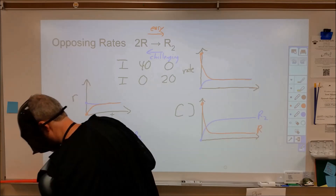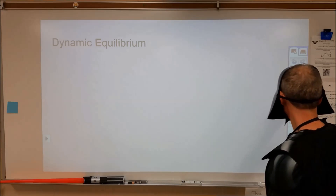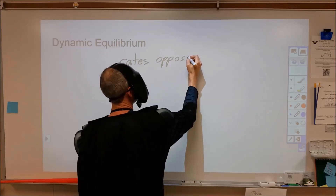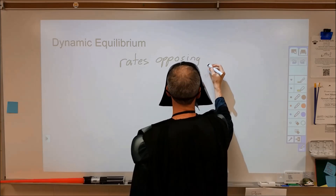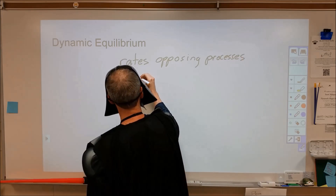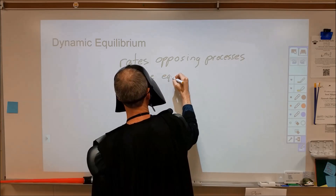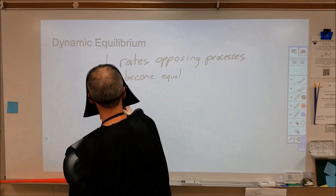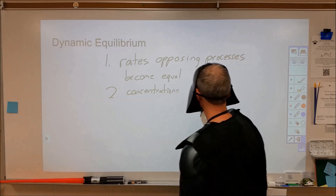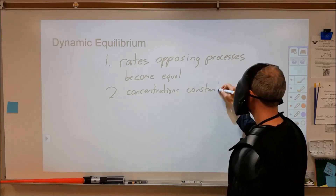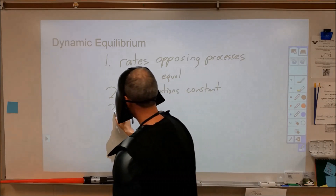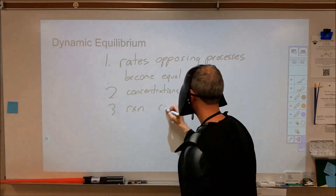Dynamic equilibrium is defined as when the rates of opposing processes become equal. The second thing that happens is the concentrations become constant. It's not static — the reaction is not stopped. The opposing processes are still going on, but the concentrations remain the same. The reactions in both the forward and reverse directions are continuing.